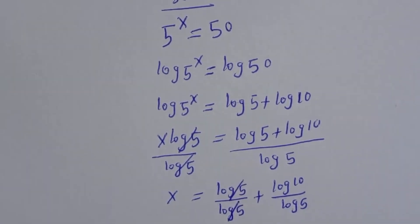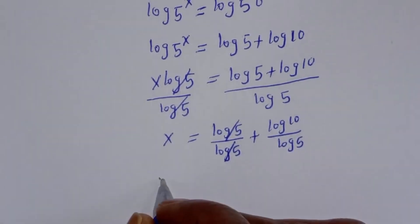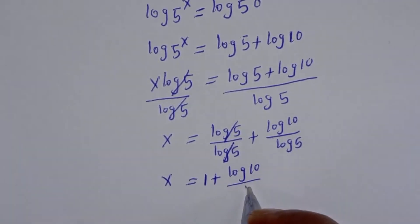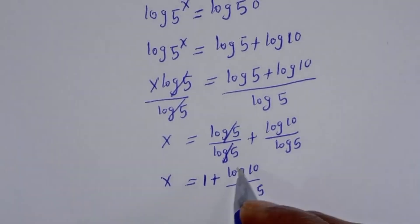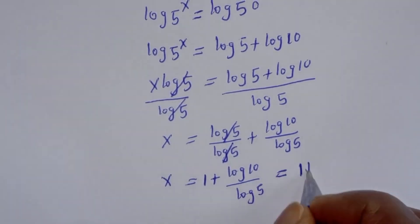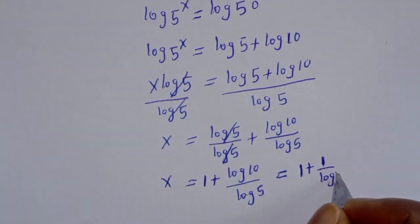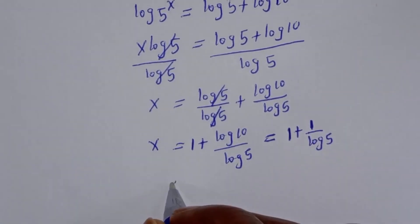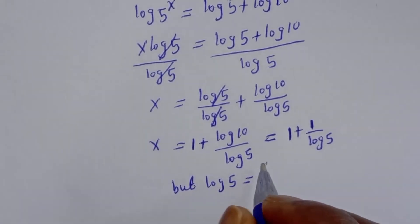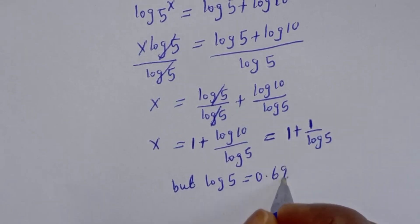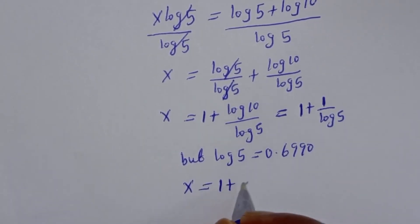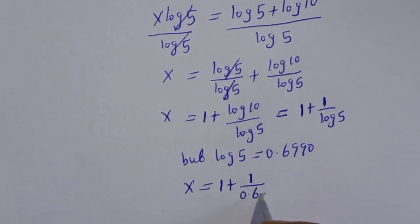This will cancel. We have 1. S is equal to 1 plus log 10 over log 5. But here the log is in base 10, therefore this is equal to 1 plus 1 over log 5. But log 5 is equal to 0.6990. Then s is equal to 1 plus 1 divided by 0.6990.